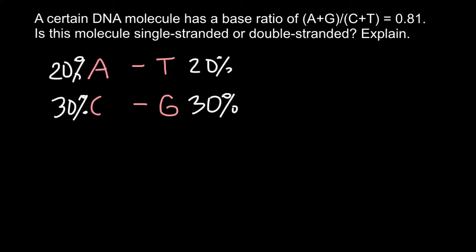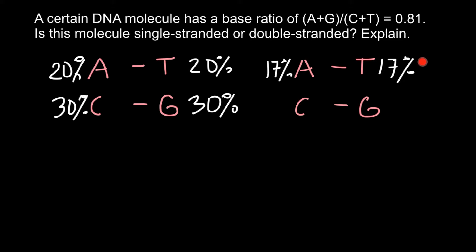Another example: adenine pairs with thymine, and cytosine pairs with guanine. If adenine makes up 17%, then thymine also makes 17%, and together they make 34% of the double-stranded DNA. The remaining 66% is cytosine and guanine — 33% each — and together all four bases make 100%.